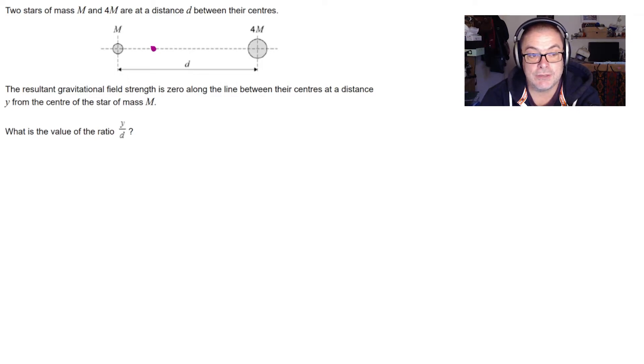We'll let the distance between m and the point be called y. That will mean that the distance from the 4m star to that point is going to be the length d minus the length y. So now we have the point where the two gravitational field strengths are equal.